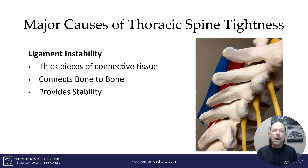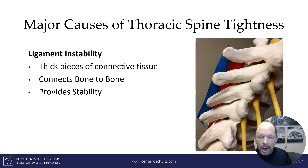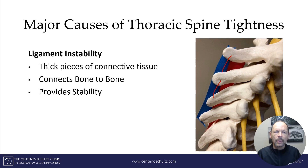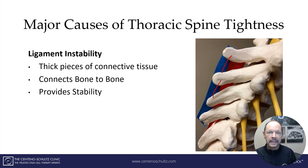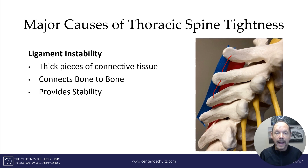Number three is ligament instability. Ligaments are thick pieces of connective tissue that connect bone to bone, as shown in the illustration, and in doing so they provide stability. Stability is key for the spine and joints in our body. If there is instability, either through degeneration, injury, or both, you can have significant pain and thoracic spine tightness.